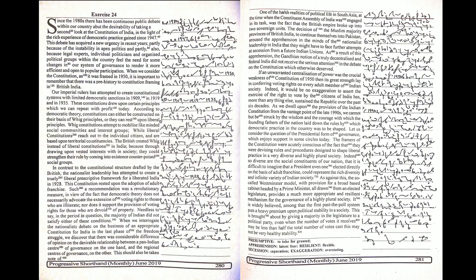the Gandhian notion of a truly decentralized and federal India did not receive the serious attention in the debate on the constitution which it otherwise deserved. If an unwarranted centralization of power was the crucial weakness of the constitution of 1950, then its great strength lay in conferring voting rights on every adult member of Indian society.